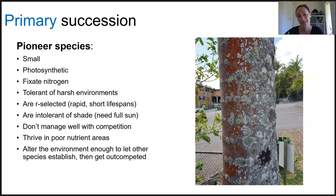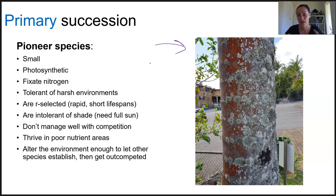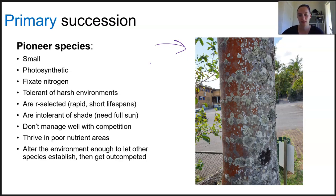In general, pioneer species are small and photosynthetic, can fix nitrogen, are tolerant of harsh conditions, are r-selected, and are intolerant of shade — you can see here a tree with lichen growing on the sunny side, with much less on the shady side. They don't manage well with competition, they thrive in poor nutrient areas, and they can alter the environment to let others come in. When lichens die off, they add nutrients to the soil they've created, allowing other organisms to immigrate to the area. A classical sequence of colonization begins with lichens, mosses, and liverworts, progresses to ferns, grasses, and shrubs, and culminates in the climax community of mature forest.